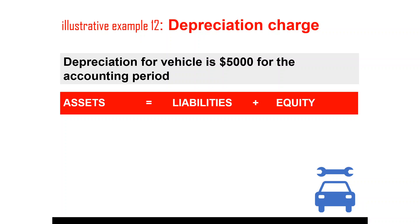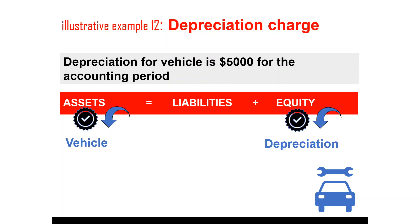Depreciation of property, plant and equipment — other than land, because land has an unlimited useful life — is another common expense item we see in the income statement. Depreciation decreases the asset value so we can get the carrying value of the asset in the balance sheet. Since it is an expense, it decreases the equity. We record the transaction as a decrease in asset by $5,000 and a decrease in equity by $5,000.